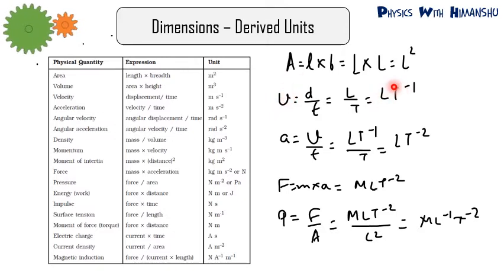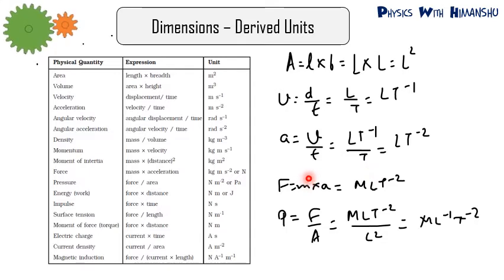Acceleration is velocity divided by time. Velocity is LT⁻¹, divided by T, so acceleration is LT⁻². Force is mass times acceleration: dimension of mass is M and acceleration is LT⁻², so dimension of force is MLT⁻². Pressure is force divided by area: force is MLT⁻² and area is L², giving dimension of pressure as ML⁻¹T⁻².